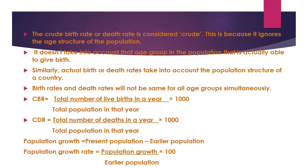The crude birth rate and crude death rate are considered 'crude' because they ignore the age structure of the population. This is raw, unprocessed data. It does not take into account which age group in the population is actually able to give birth. The age group capable of giving birth is not separately calculated, hence it is termed crude.